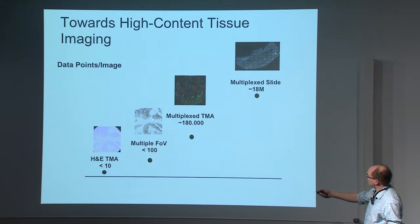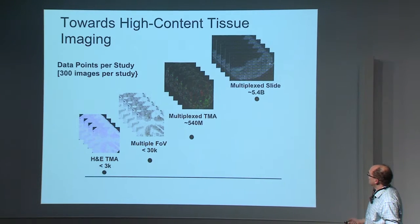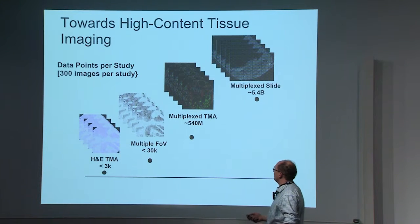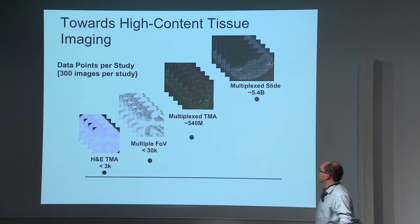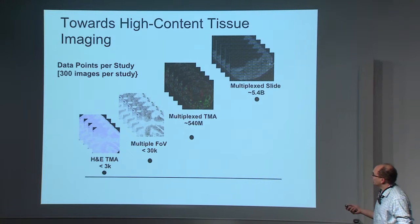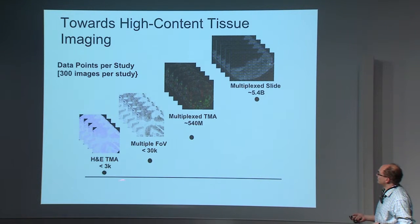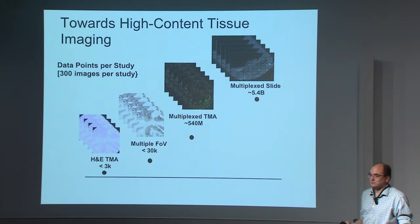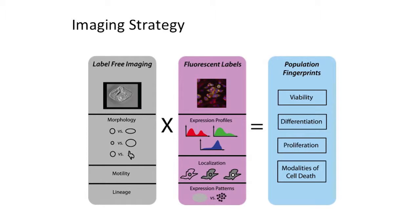A multiplex slide has eighteen million measurements. And if you have a small study of three hundred images per study — which is really not a lot and doesn't even mean three hundred patients — you go from three thousand measurements to four point five billion measurements.